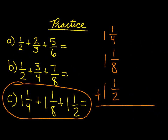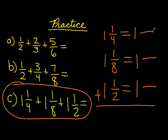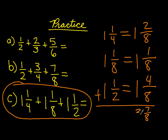Finally, we have letter C: one and one-fourth, one and one-eighth, plus one and one-half. Start by writing your numbers vertically. Bring over your whole numbers. Find your common denominator. Add up your fractions first, then add up your whole numbers. Three and seven-eighths is your answer.